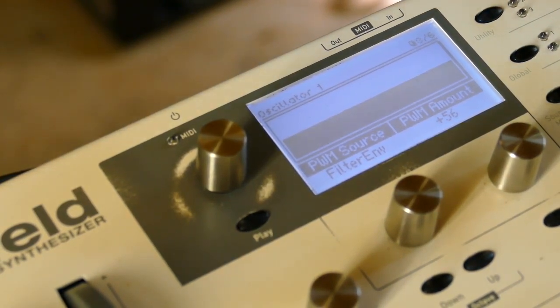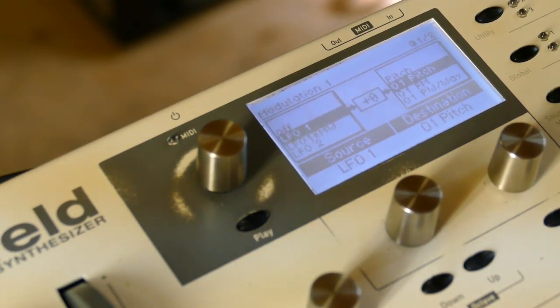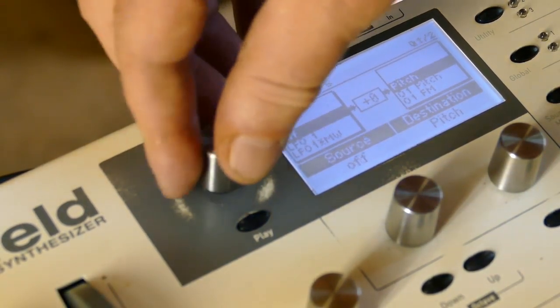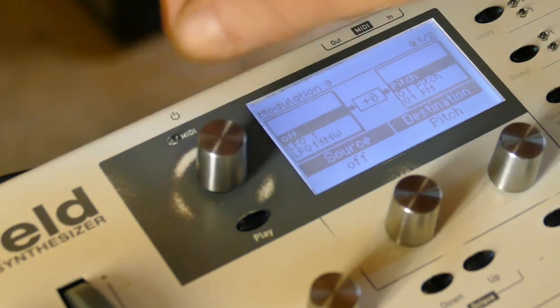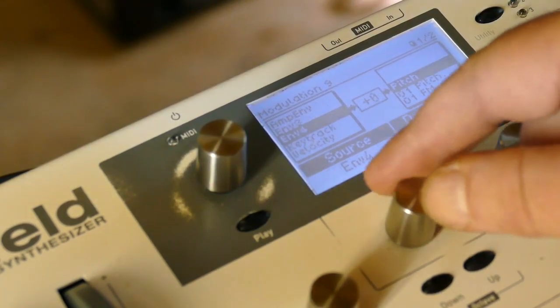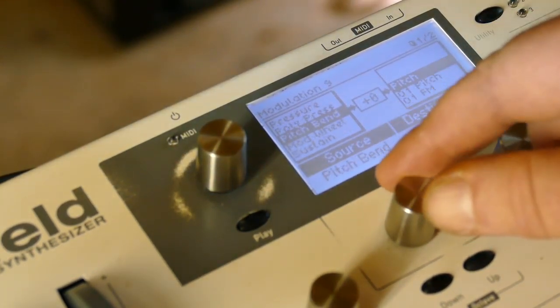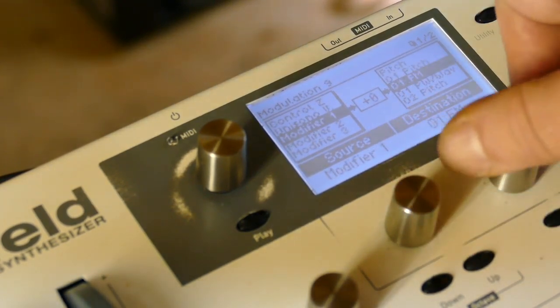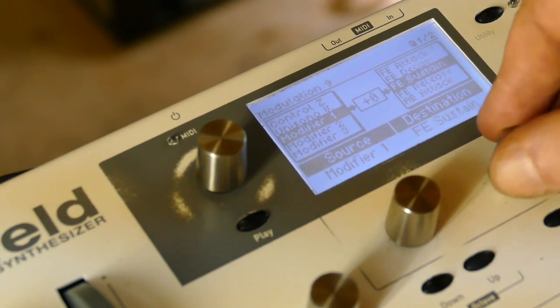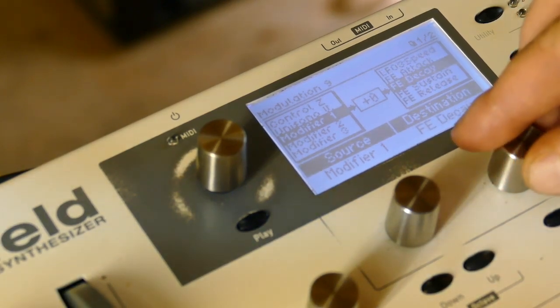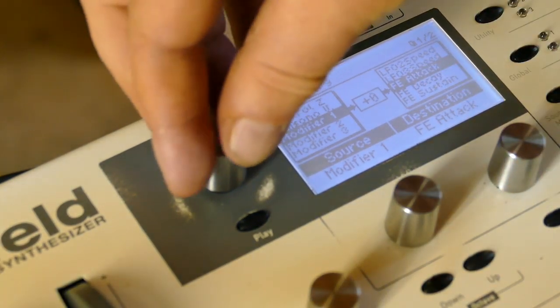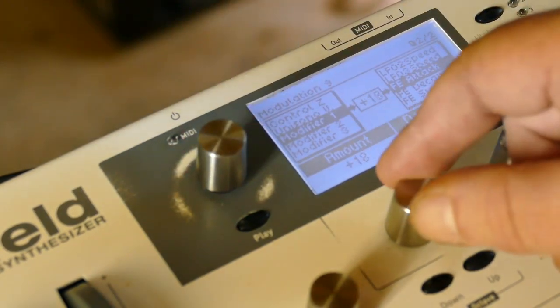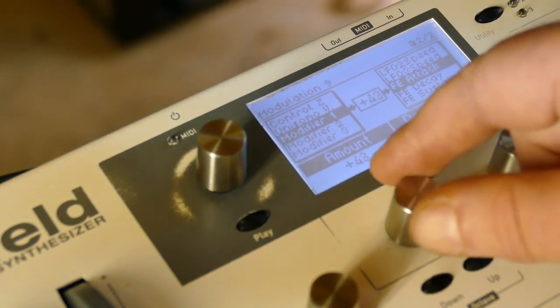Very short, sharp attack. Now I'm going to recursively modify that. Go to an open slot, I'm going to say modifier one controls filter envelope attack plus 48. Let's hear what that does.